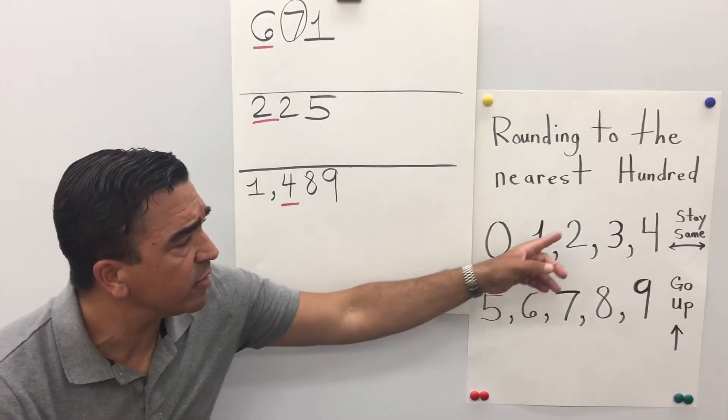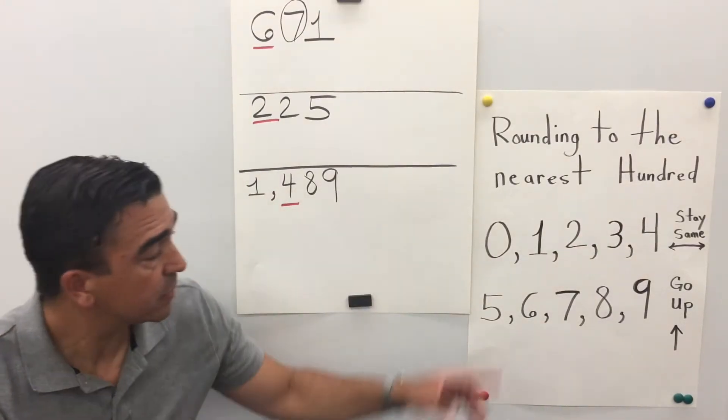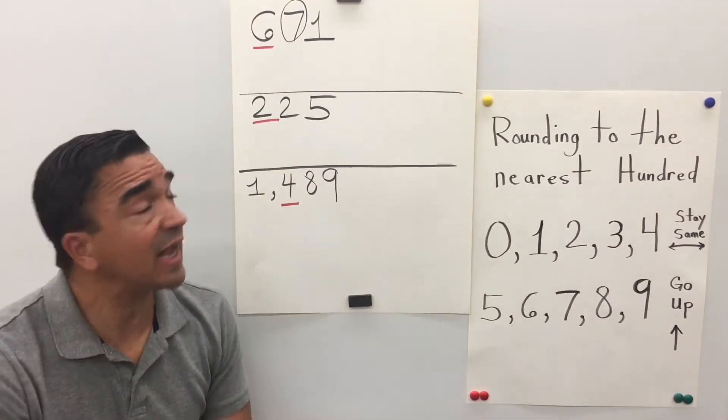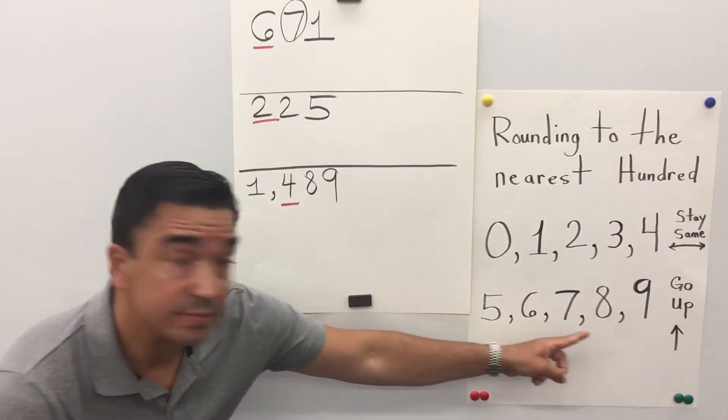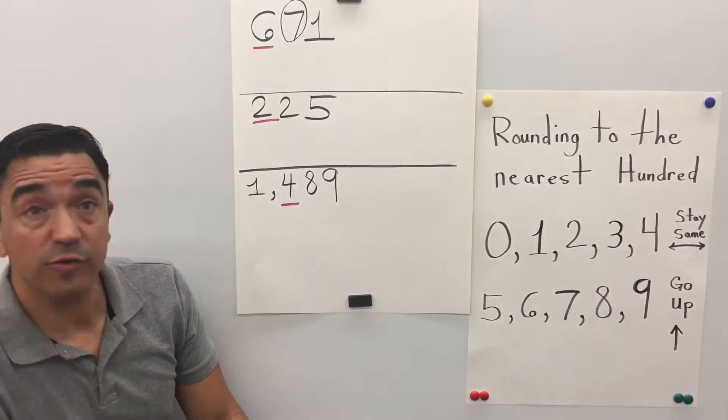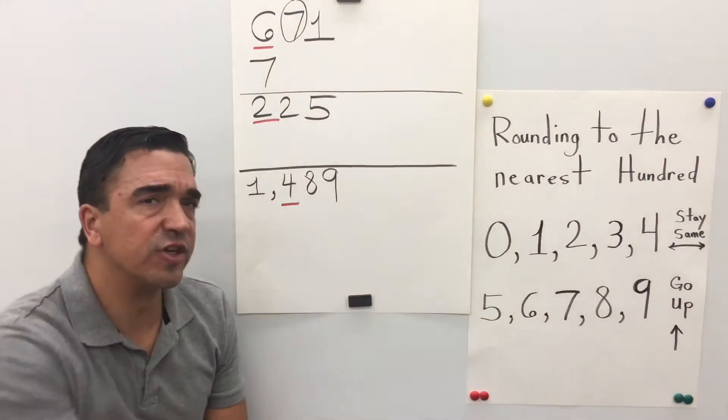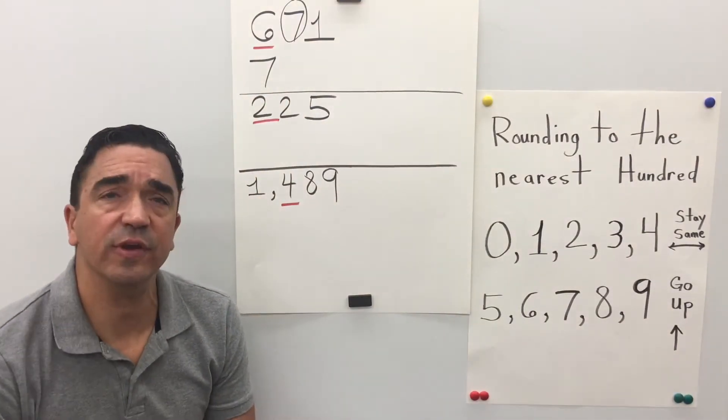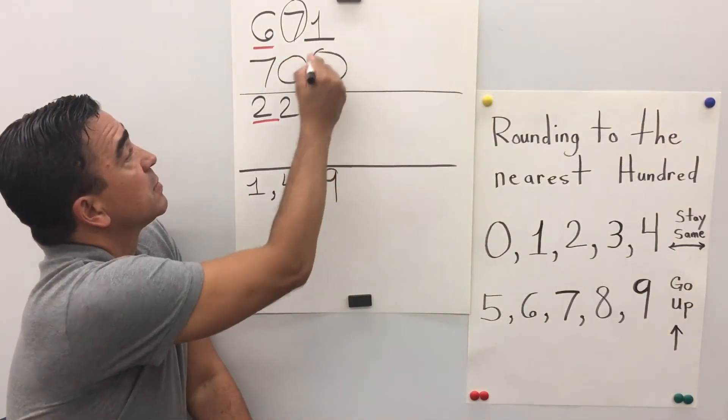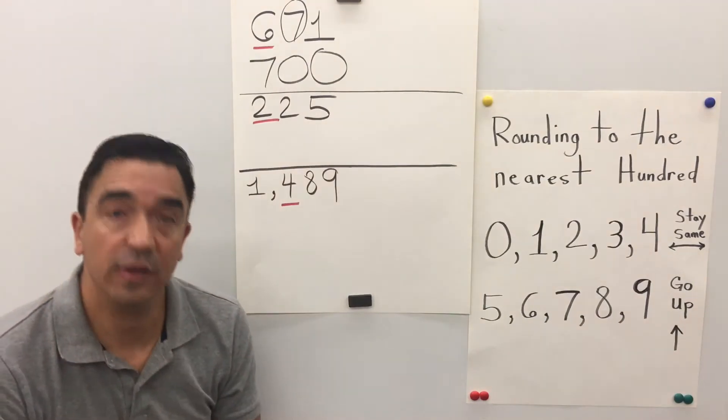If the number is 0, 1, 2, 3, or 4, it stays the same. If it's 5, 6, 7, 8, or 9, it goes up. So like I said, the 7 tells the 6 to go up, and the 6 becomes a 7. All the digits after become a 0, so these two digits will both become 0. 671 rounded to the nearest hundred is 700.